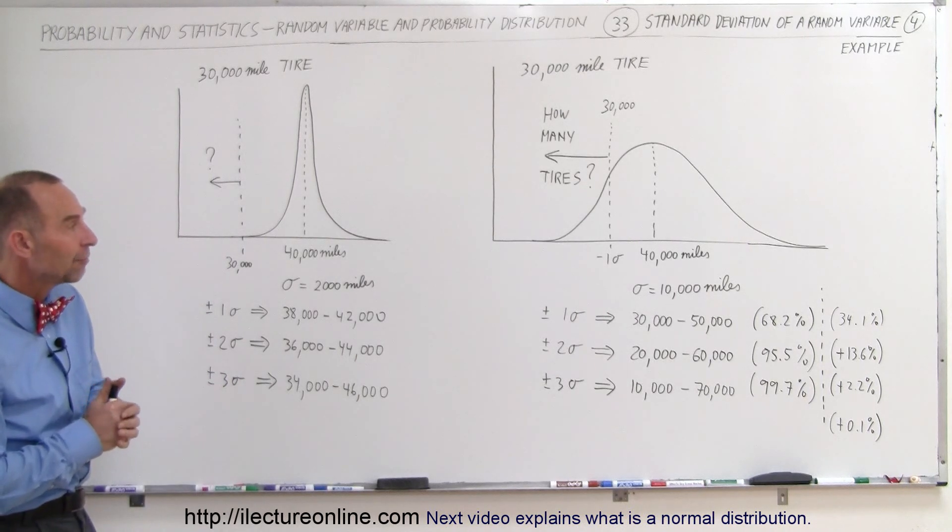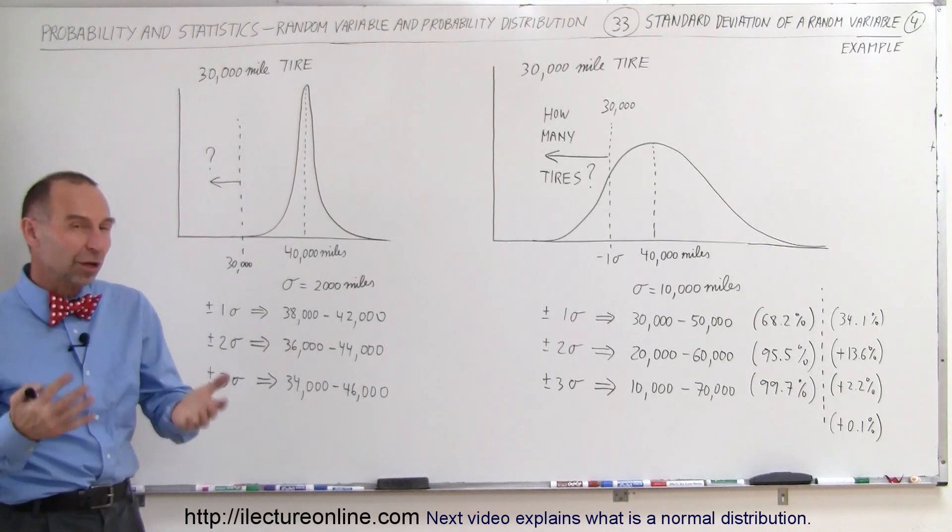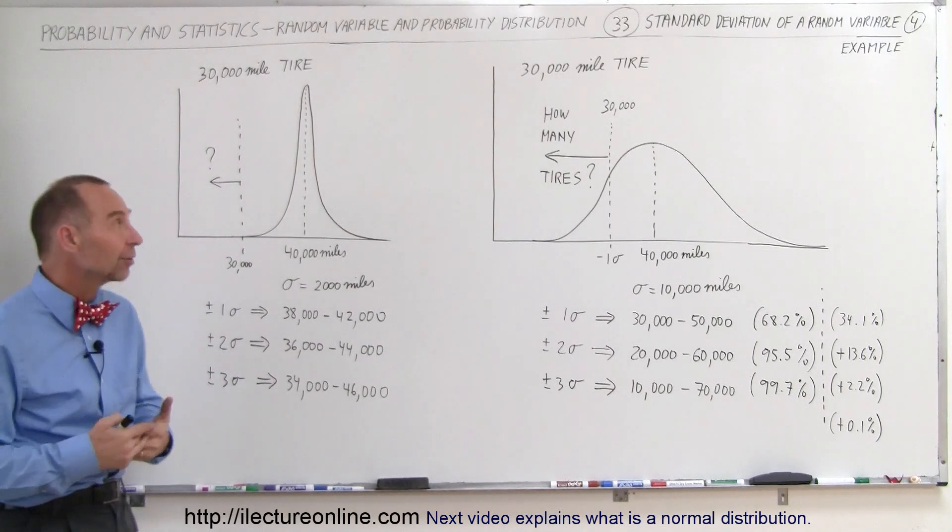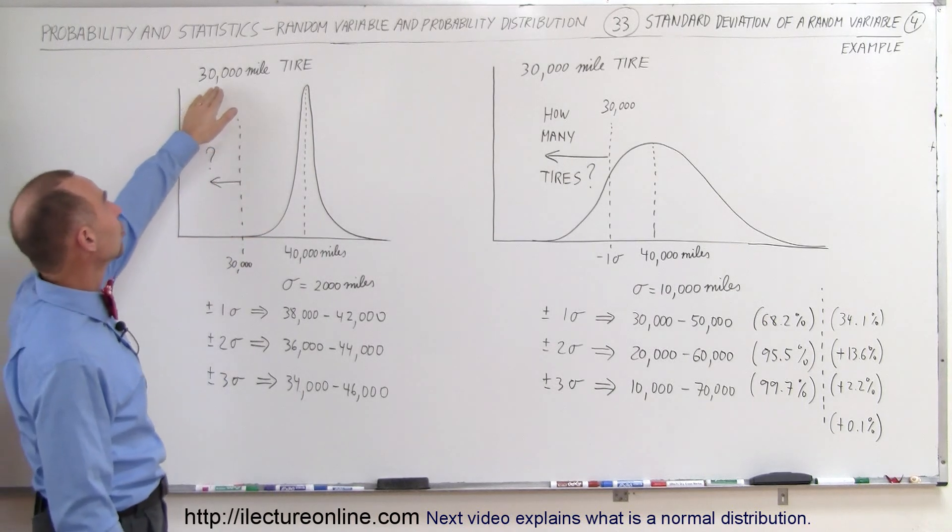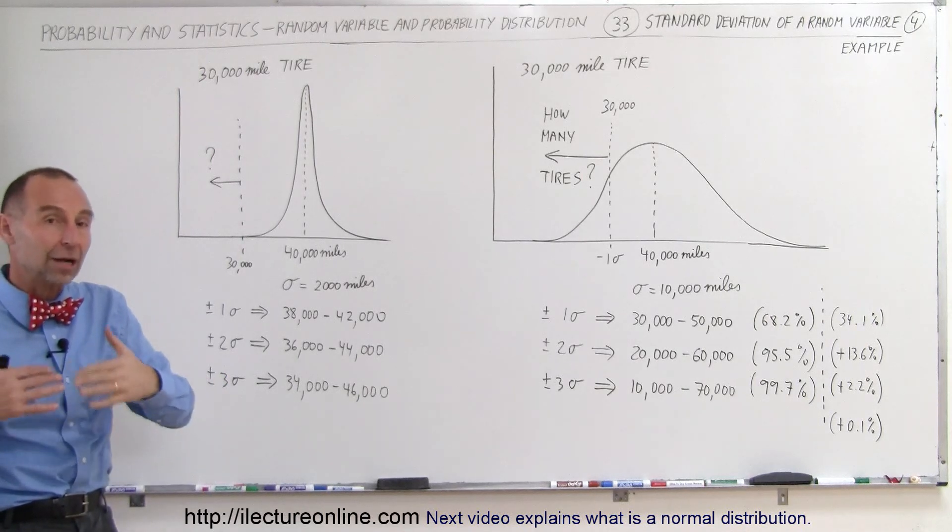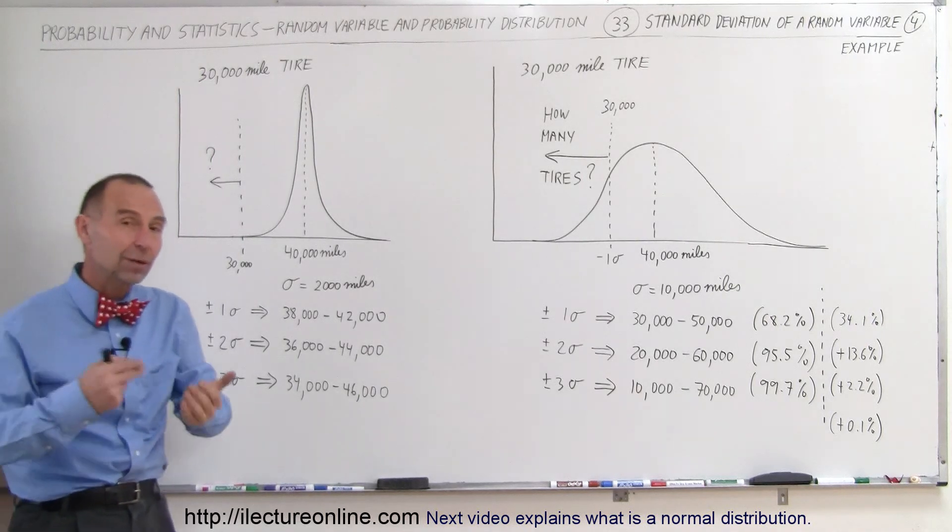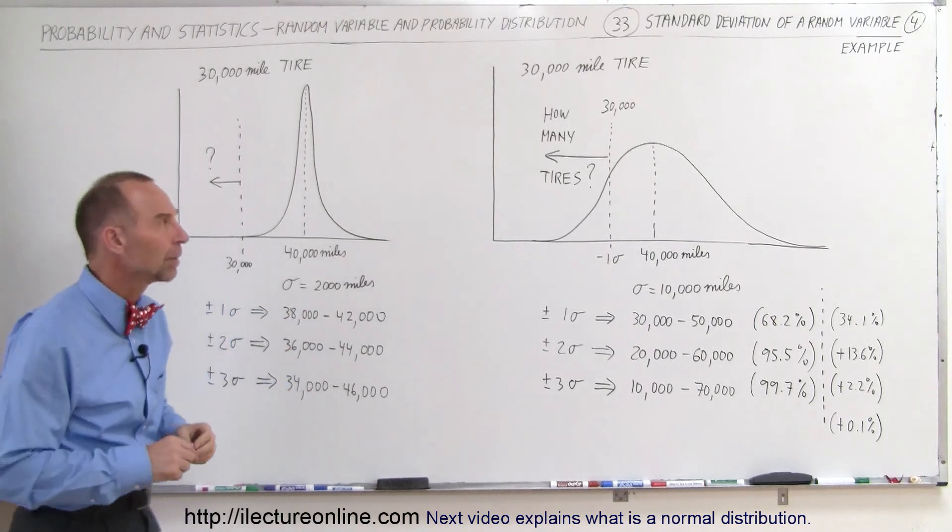Here we have an example of what a tire company could look like as far as their production of tires and their quality of tires. For example, let's say that we have two different companies, each is trying to produce a 30,000 mile tire. In other words, they pretty well guarantee that the tire will last 30,000 miles. If not, bring it back and we'll replace it or give you the value for the missing miles.